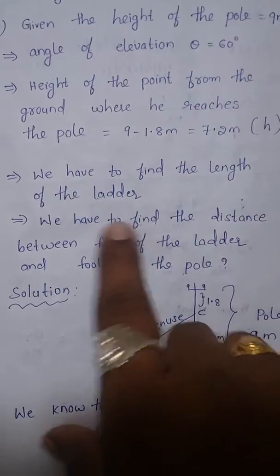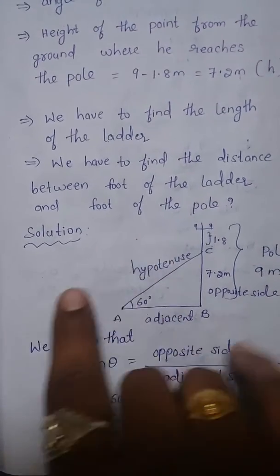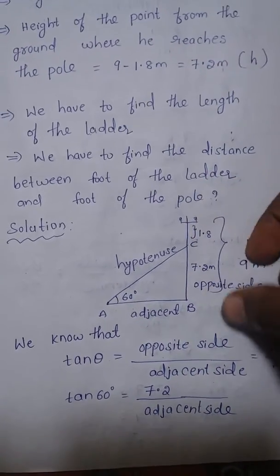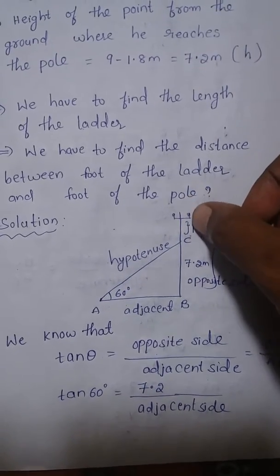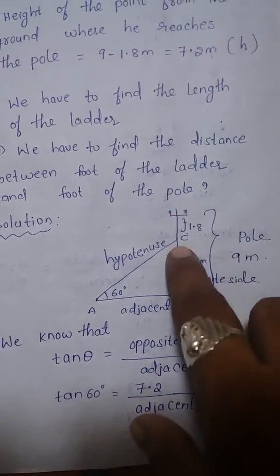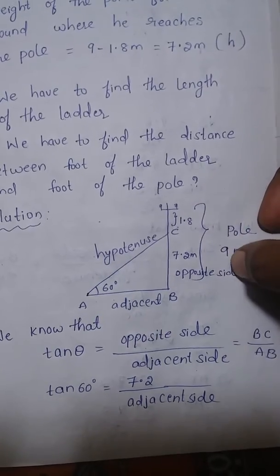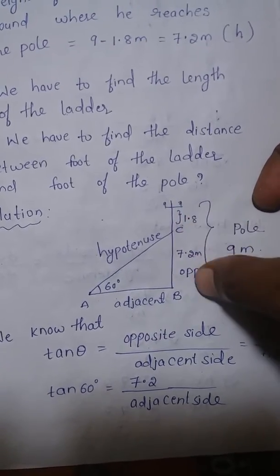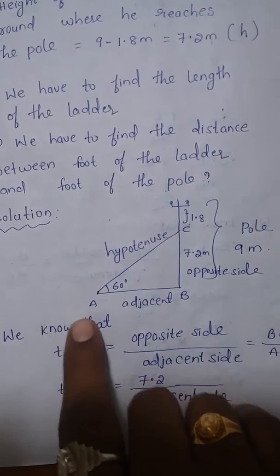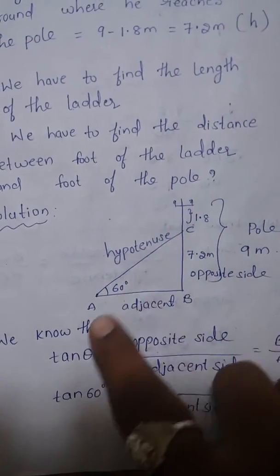We have to find the length of the ladder as well as the distance between the foot of the ladder and the foot of the pole. Here is the diagram: ABC is a right angle triangle. This is the electric pole of height 9 meters. After subtracting 1.8 from 9, we get 7.2 meters as the height where he is going to do the repair work. AB is the adjacent side, BC is the opposite side, and AC is the hypotenuse.